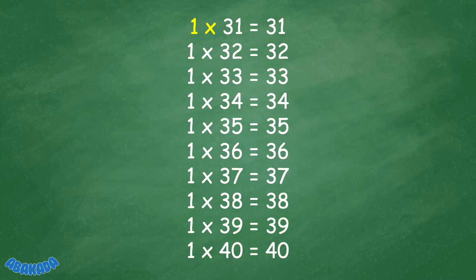1 times 31 equals 31. 1 times 32 equals 32. 1 times 33 equals 33. 1 times 34 equals 34. 1 times 35 equals 35.